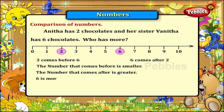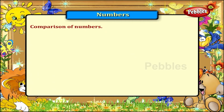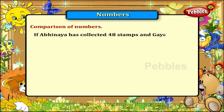6 is more than 2. It is written as 6 greater than 2. So Vanita has more chocolates. If Abhinaya has collected 48 stamps and Gayatri has 52 stamps, who has collected fewer stamps?